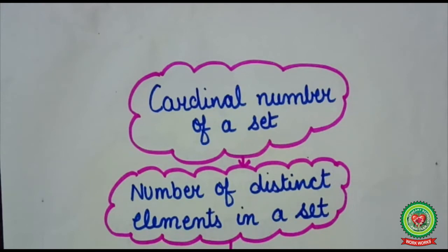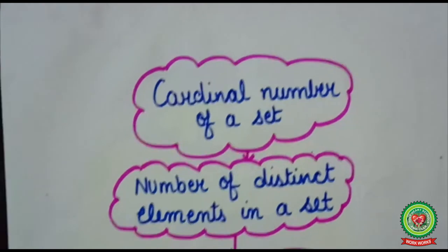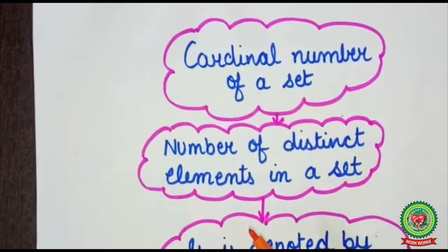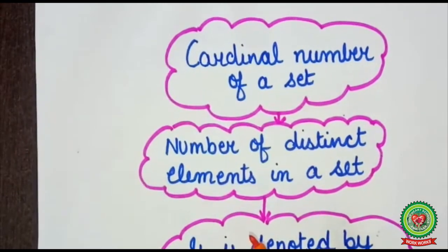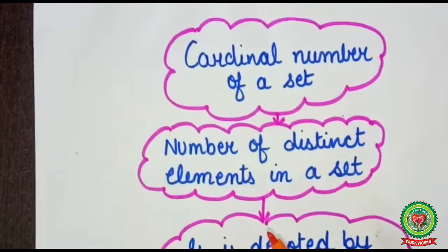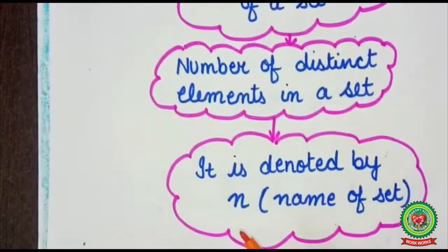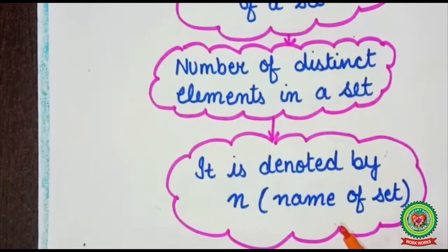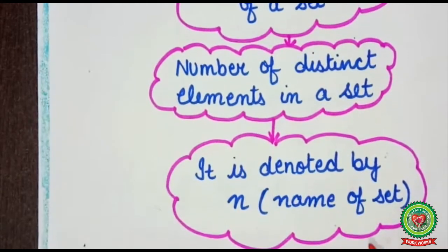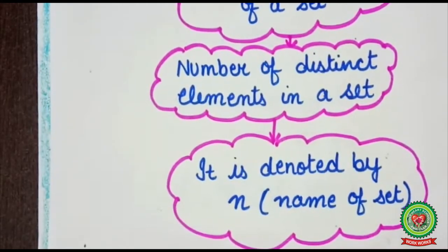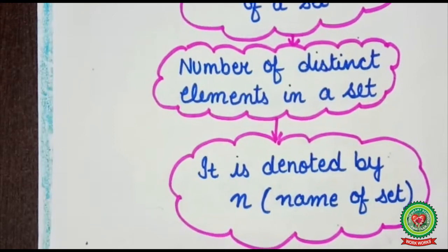So, what is cardinal number of a set? Cardinal number means the number of distinct elements in a set. The word 'distinct' means we will not count repeated elements. It is denoted by small n, and in brackets we write the name of the set — that is capital A, capital B, capital C, and so on.